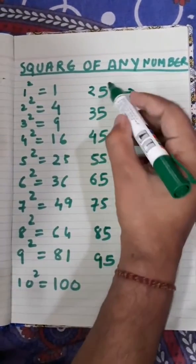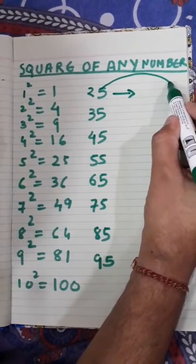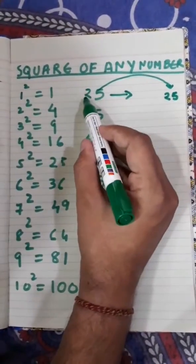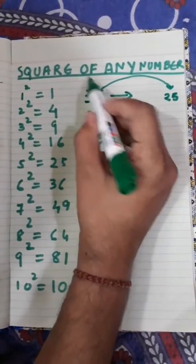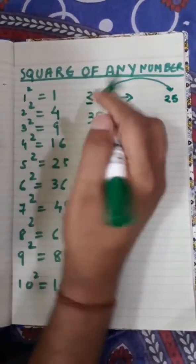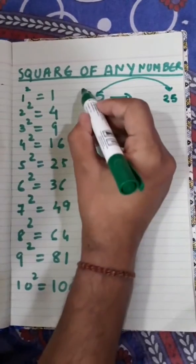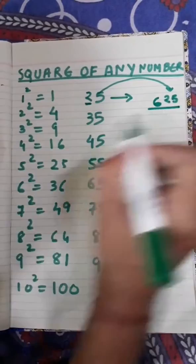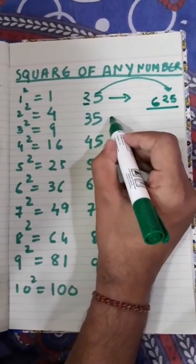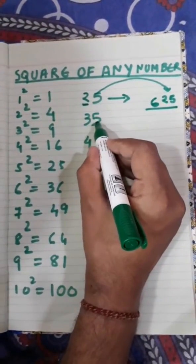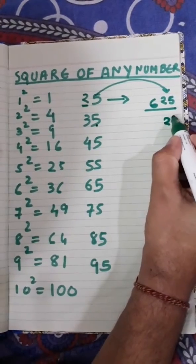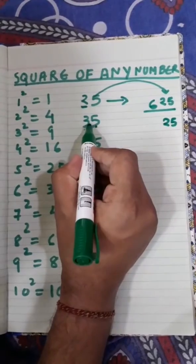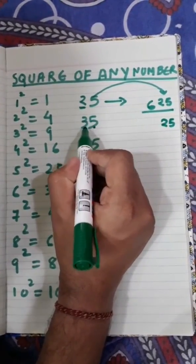Next, multiply the first digit by the next consecutive digit. For 25: first digit is 2, next digit is 3, so 2 × 3 = 6, giving 625 as the square of 25. Similarly for 35: write 25 first, then 3 × 4 = 12, giving 1225 as the square of 35.